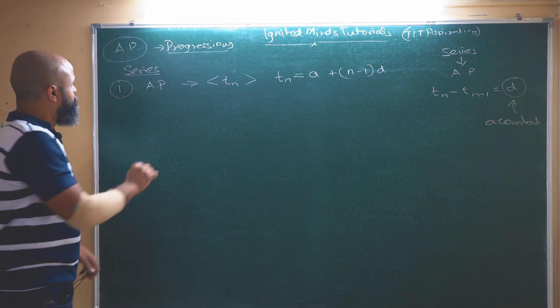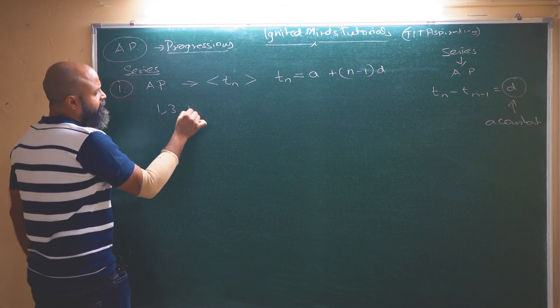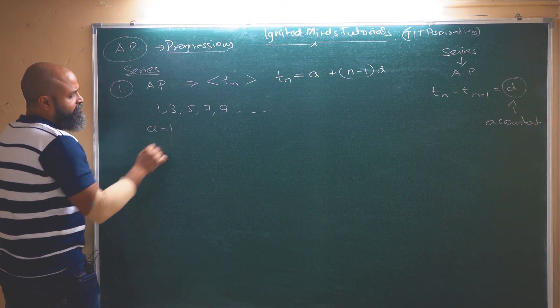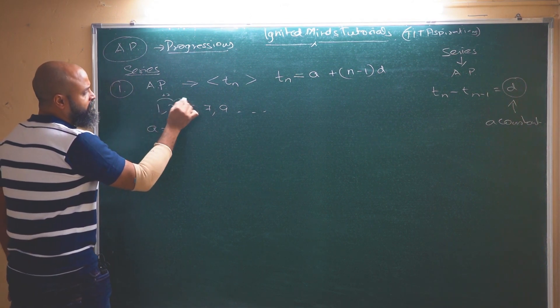So let us have a look at this. Any series, let us say if we take a number series of 1, 3, 5, 7, 9 etc., we will have the first term as 1. As you can see that this has a common difference of plus 2.